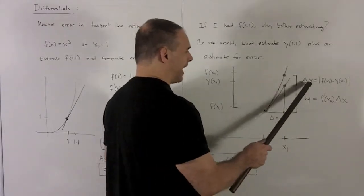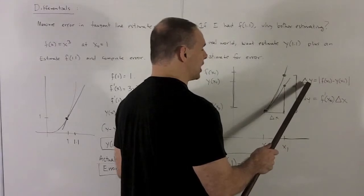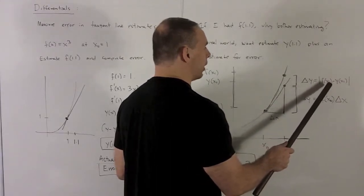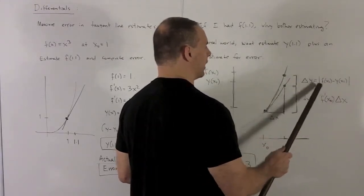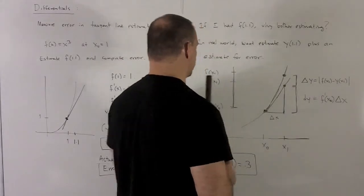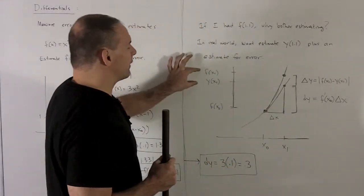Then the actual error when I measure with the tangent line is going to be f(x1) minus y(x1), in absolute value. So it's just going to be the difference between these two values.